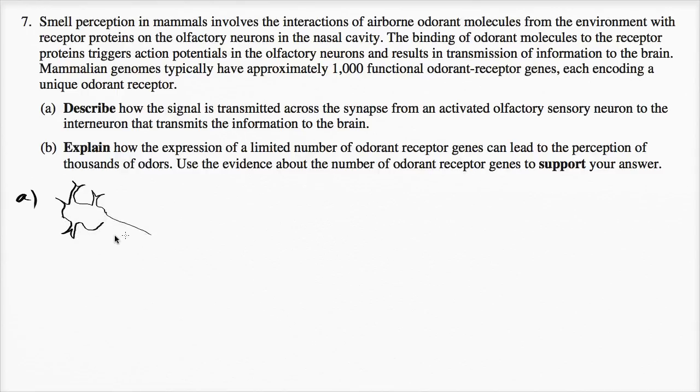So those are its dendrites right over there, and then this is its axon, and then this is the axon terminals, just like that. I could draw other details, and I don't think you'd have to draw all of these details on the actual test, but just to get a sense of things. We could also draw the nucleus right over there.